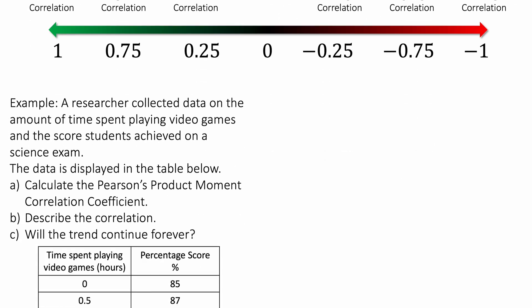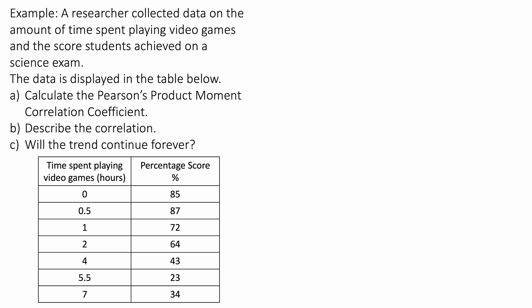Example: a researcher collected data on the amount of time spent playing video games and the score students achieved on a science exam. The data is displayed in the table below. We're asked to calculate Pearson's product moment correlation coefficient, describe the correlation, and then it asks will the trend continue forever.